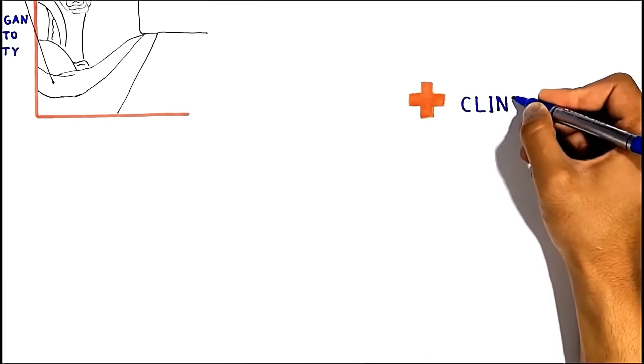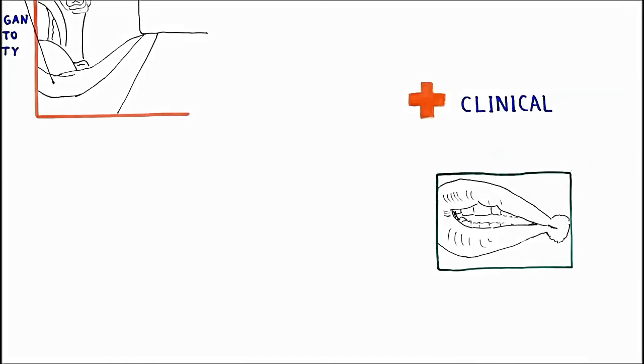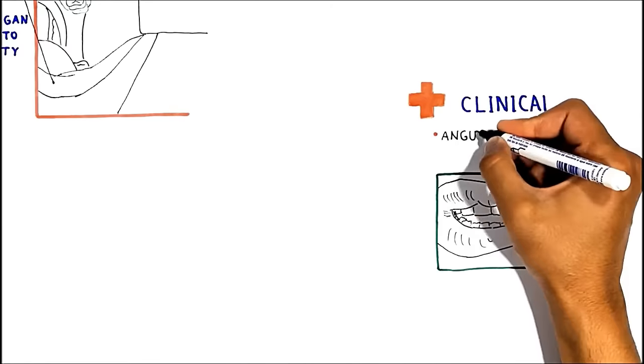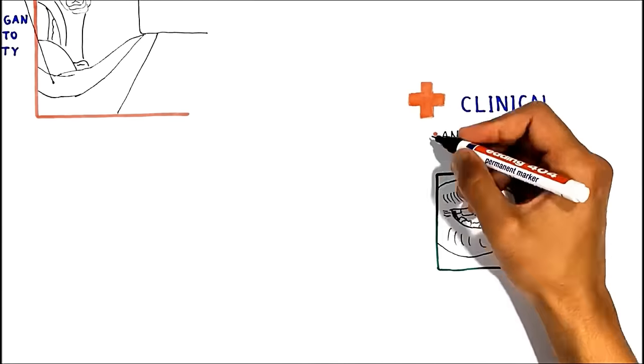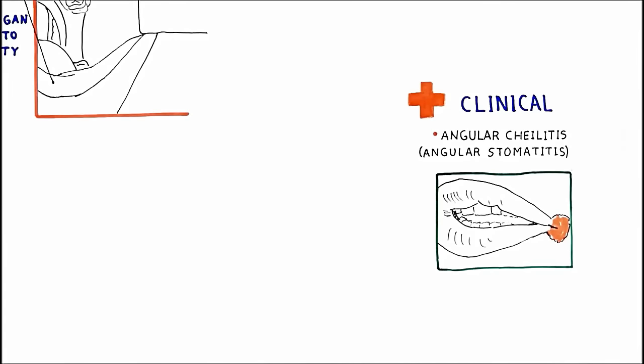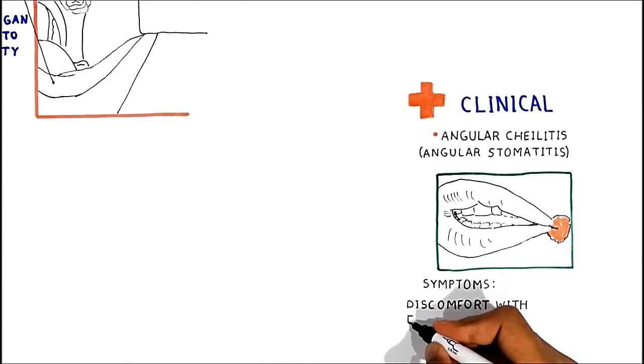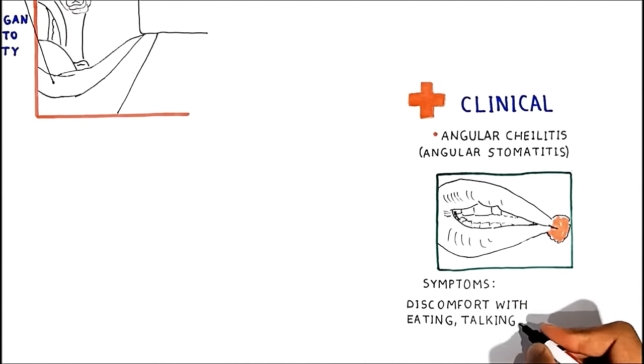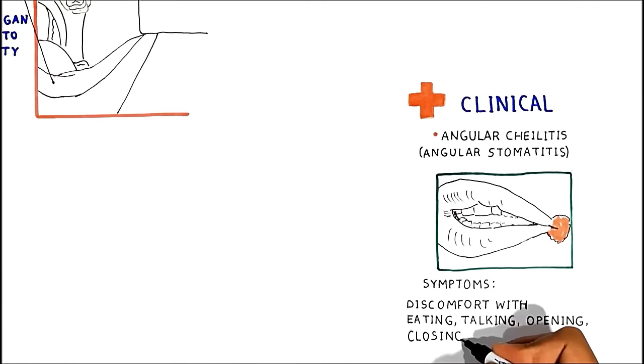In clinical practice, sometimes the corner of the mouth where both lips meet together inflames and causes angular cheilitis, also known as angular stomatitis. Angular stomatitis often represents an opportunistic infection of fungi or bacteria and is characterized by noticeable blisters at one or both corners of your mouth, very noticeable discomfort with eating, talking, opening and closing your mouth.